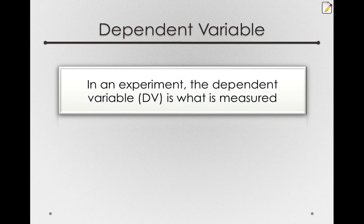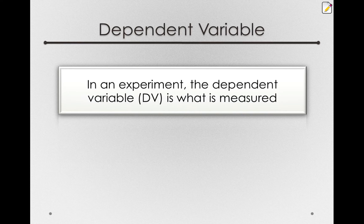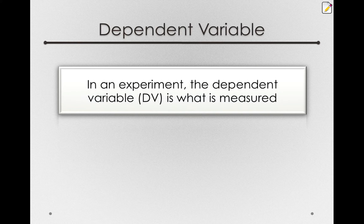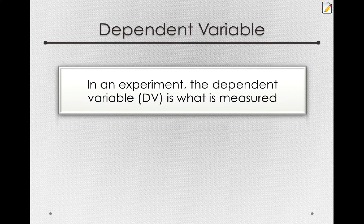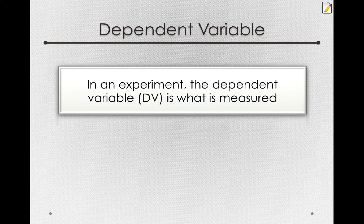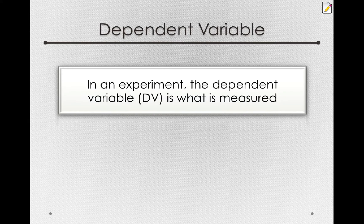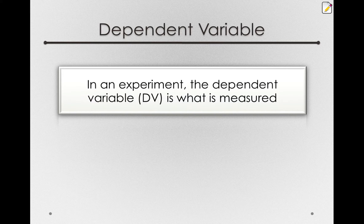The dependent variable in an experiment is what is measured. This is presumably the variable we think depends on the independent variable. Going back to that exam and caffeine example, the independent variable is whether we give one caffeine or not, and the dependent variable would be their exam score.